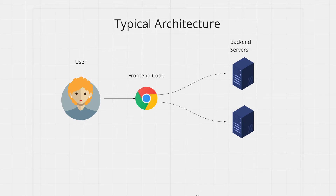Let's look at a typical web architecture without any reverse proxy. You have some front-end code that runs on the user's browser. You have two backend servers — one deals with your authorization and authentication logic, and the other deals with your core business logic. In your front-end code you explicitly mention the DNS of your servers so that you can make API requests from the front-end.